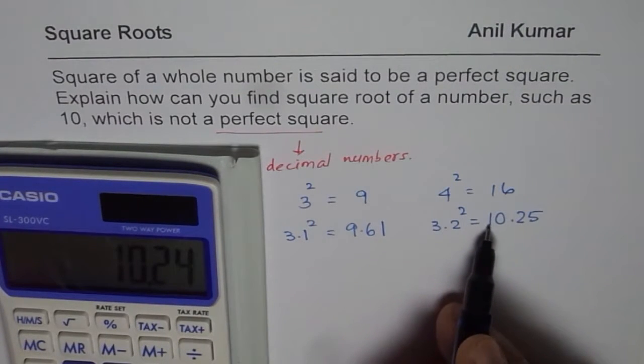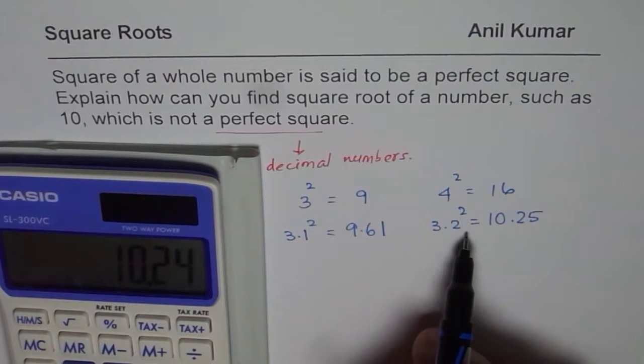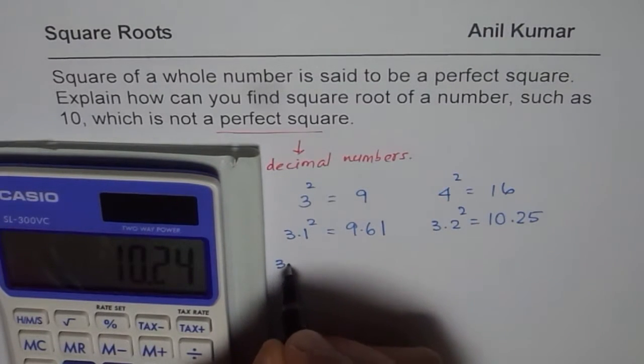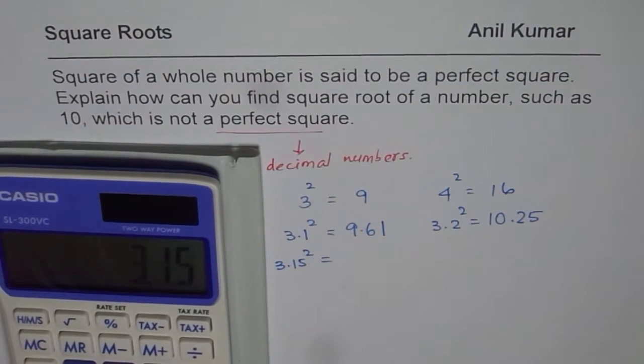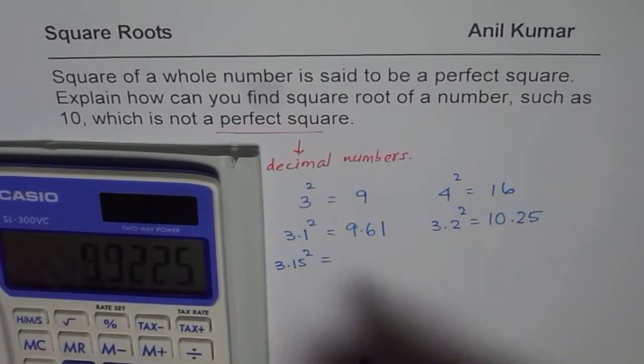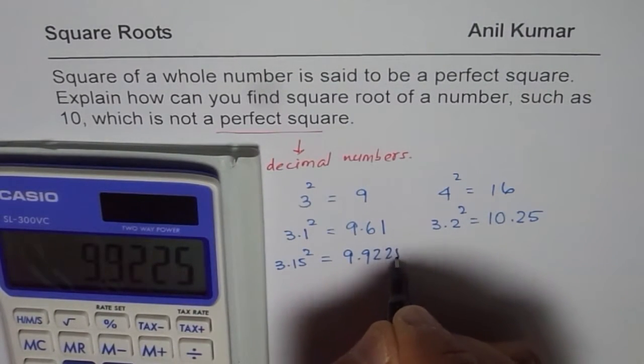Now, 3.2 square is slightly more than 10. So we can try a value which is between 3.1 and 3.2. So let us try 3.15 square. So that is 3.15 times 3.15 equals to 9.9225.